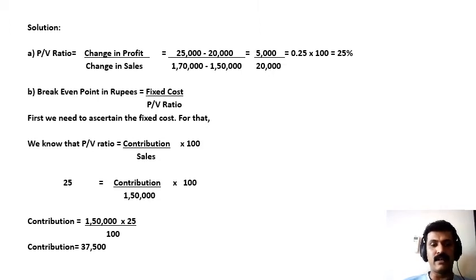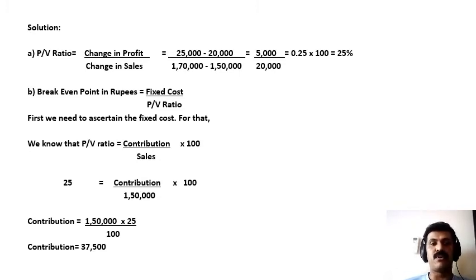First, we are asked to calculate the PV ratio. Since two years' financial data is given in the problem, we have to use the formula: change in profit divided by change in sales. Change in profit is 25,000 (second year) minus 20,000 (first year), which equals 5,000. Change in sales is 1,70,000 minus 1,50,000, giving a difference of 20,000.